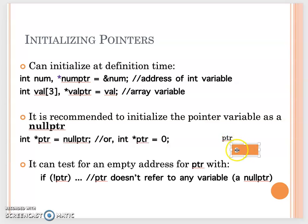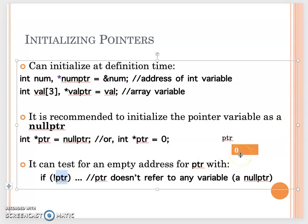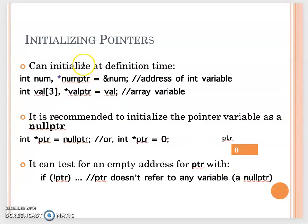When a pointer value is 0, it means it refers to an empty address. In C++, if you want to test whether a pointer refers to a value or not, you can write: if (!ptr) — do something. Because if ptr equals 0, that's false, and not-false means this is an empty location. So if ptr refers to an empty location, you can handle that case. That's how we initialize the pointer.